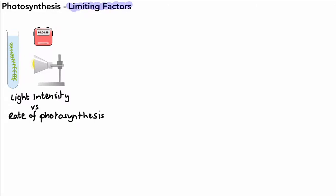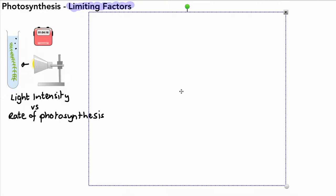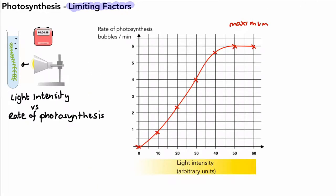Hello. The video today is all about limiting factors in photosynthesis. As a reminder, we have previously looked at light intensity versus the rate of photosynthesis and described an experiment where we varied light intensity by changing the brightness of a bulb. We had bubbles given off by pond weed called Elodea, and for different light intensities we drew a graph. For a light intensity of 10 arbitrary units, the rate of photosynthesis is low compared to the rest of the graph.